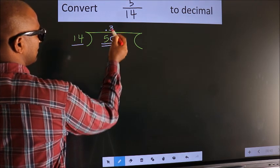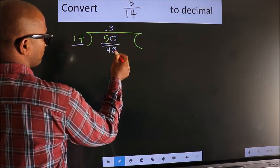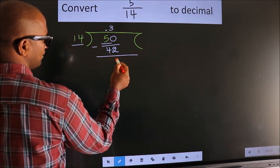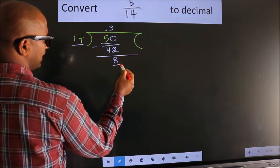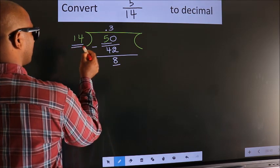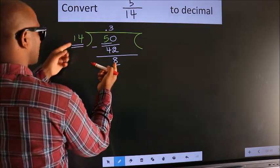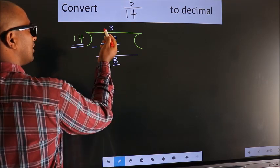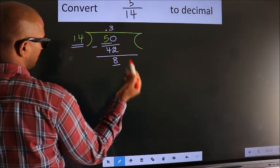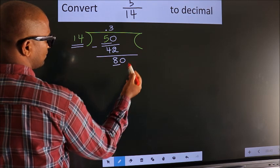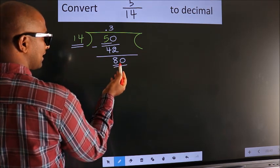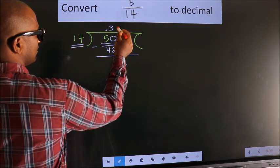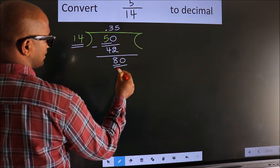14 threes are 42. We subtract to get 8. Now we have 8 here; 8 is smaller than 14, and we already have the decimal, so we can directly take 0, making it 80. A number close to 80 in the 14 table is 14 fives, which is 70.